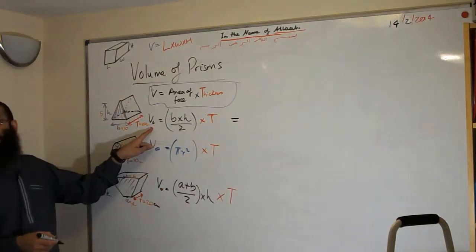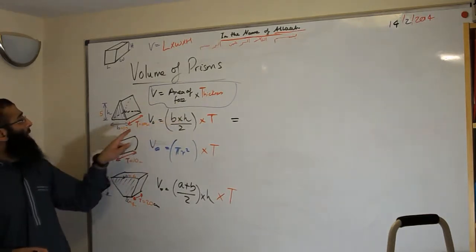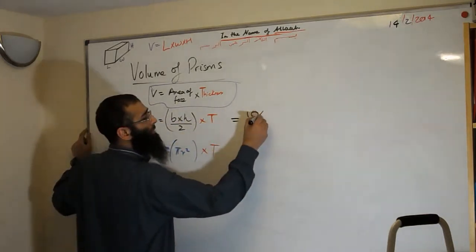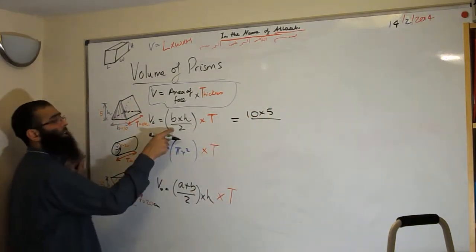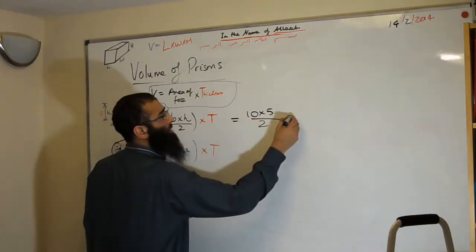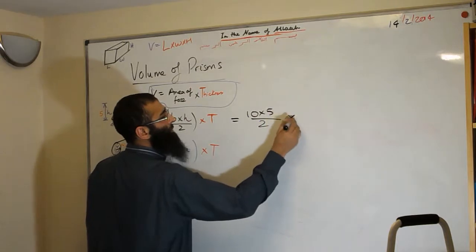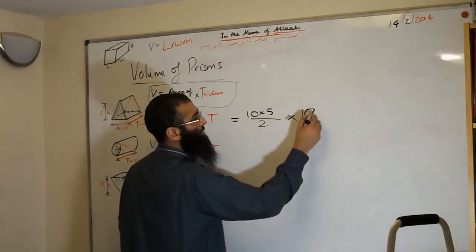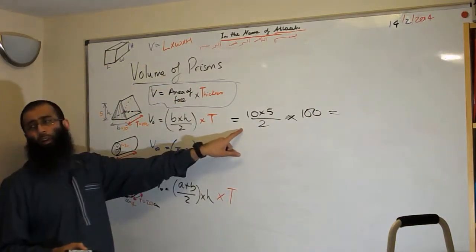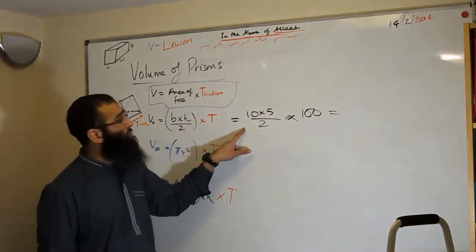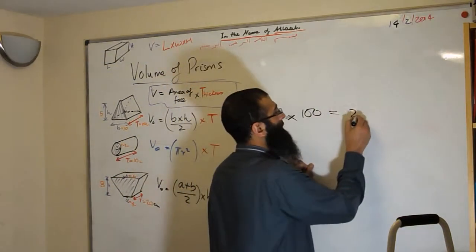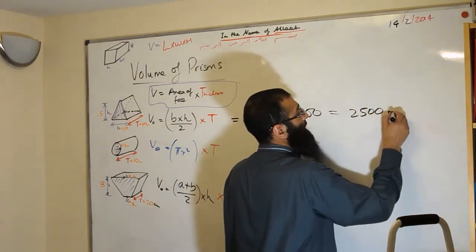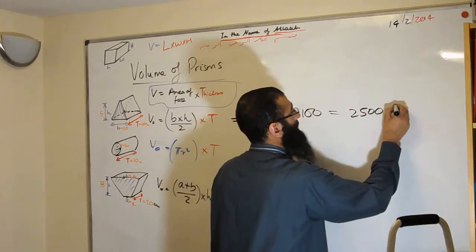The volume of the triangular prism is equal to base times height, divided by 2, times the thickness. So that's 10 times 5, divided by 2, times 100. Ten times five is 50; 50 divided by 2 is 25; 25 times 100 is 2500. So the volume is 2500 meters cubed.